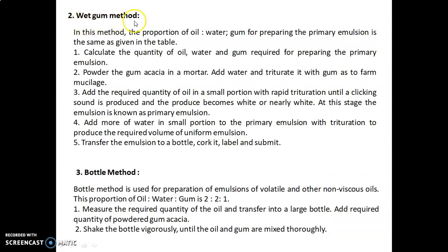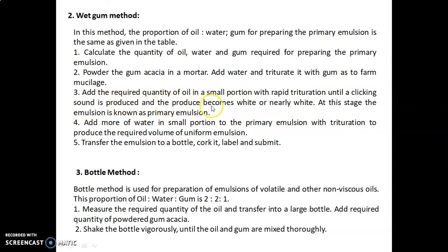In the wet gum method, the proportion of oil, water, and gum for preparing the primary emulsion is the same as given in the table. Calculate the required quantities, powder the gum acacia in a mortar, add water, and triturate to form mucilage. Then add the required quantity of oil in small portions with rapid trituration until a clicking sound is produced and the product becomes white or nearly white — this is the primary emulsion. Add more water in small portions with trituration to produce the required volume, then transfer the emulsion to a bottle, cork it, label, and submit.